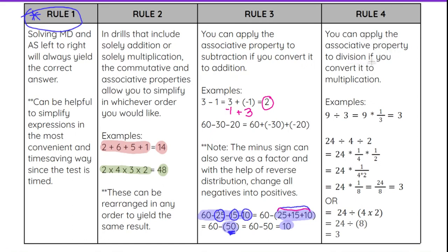Rule 4, you can apply the associative property to division if you convert it to multiplication. We've talked about that in a previous video. If I have 9 ÷ 3, you're probably going to know that off the top of your head and know that it's 3. But showing you in a simple format can help you understand when it gets to be a little less simple.